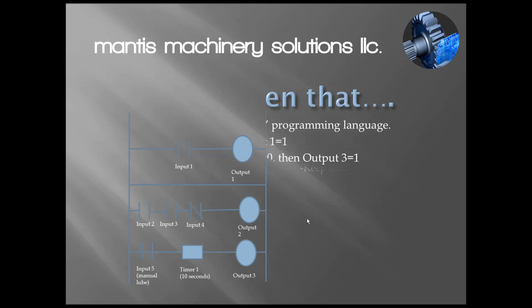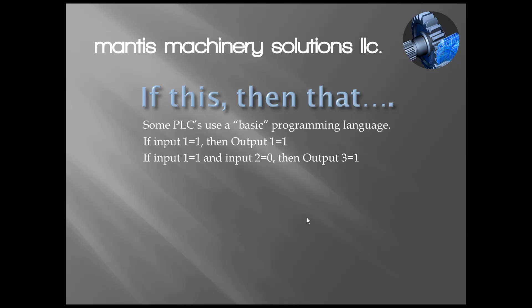One more thing I'd like to mention - some of the newer PLCs use basic programming. Often there's a ladder in the background, but to make it easier to program, they have what's called basic programming. Literally the program will look like if this, then that. The programmer will write in if input number one equals one or high, then output one equals one. Or if one equals one and two equals zero and three equals whatever, then output number three. It's just a different way to program and it depends on what you're comfortable with.